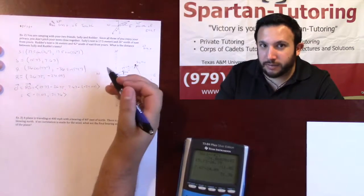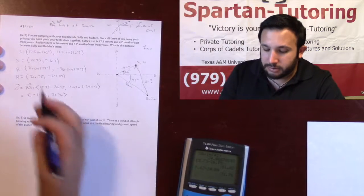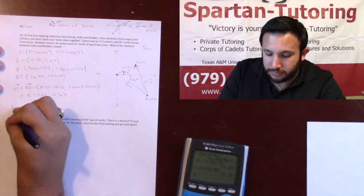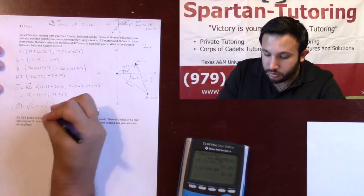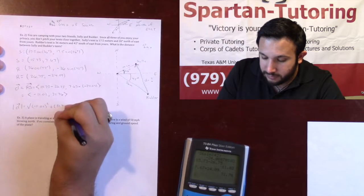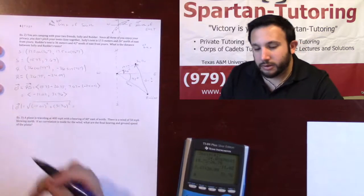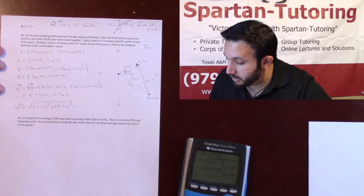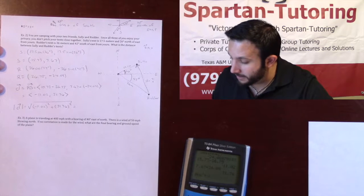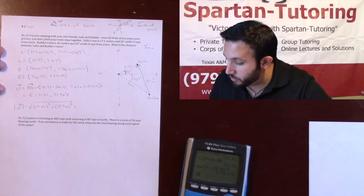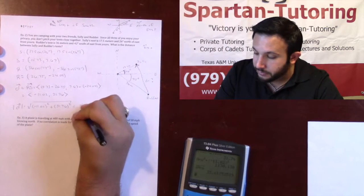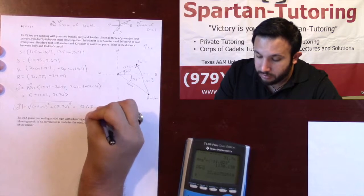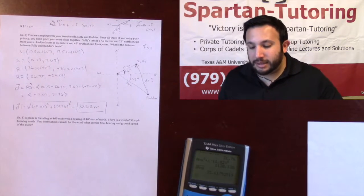Now that I have this vector, the last thing is to find its magnitude, which gives the distance. The magnitude of D = √((−11.02)² + (31.76)²). Putting that in the calculator, we get that the distance is 33.62 meters — that's how far apart Soli and Rudder's tents are.